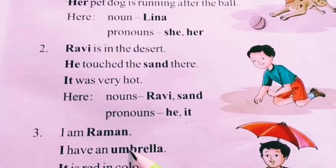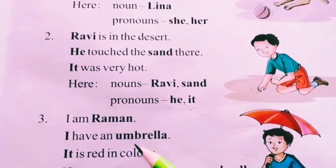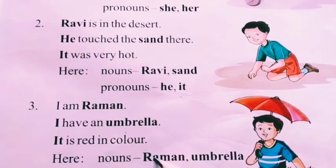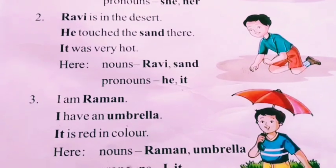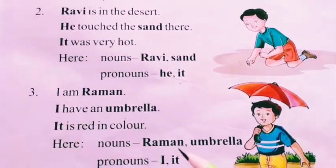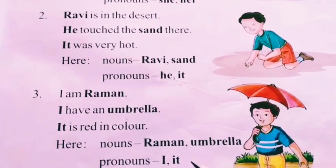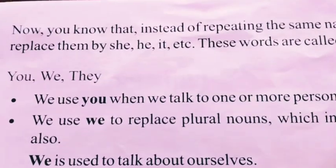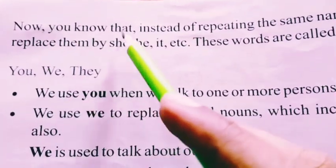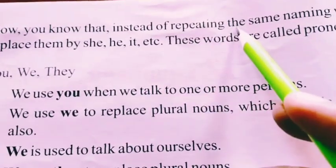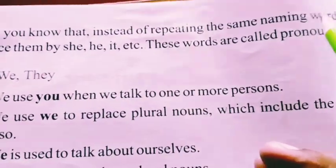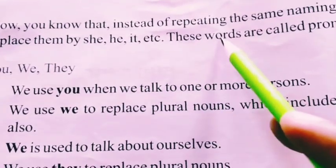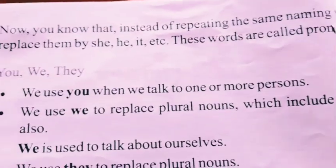I have an umbrella. It is red in color. Now you know that instead of repeating the same naming words, replace them by she, he, it, and others. These words are called pronouns.